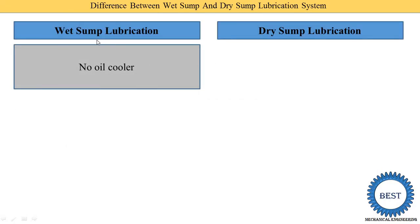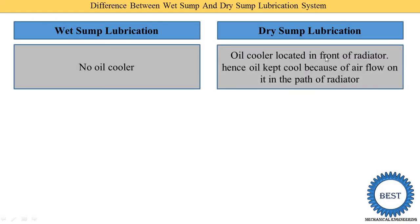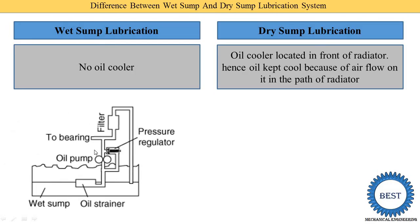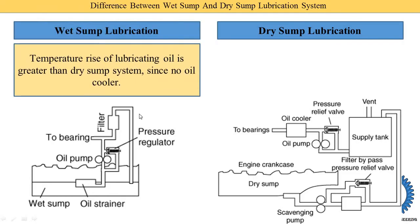The next difference is the oil cooler. In a wet sump lubrication system, no oil cooler is used. In a dry sump lubrication system, the oil cooler is located in front of the radiator, so the oil is kept cool due to airflow past the radiator. Here you can see in this figure of the wet sump, no oil cooler is used. In the dry sump system, the air cooler cools the oil using airflow, which is why it is also called a radiator. Air passing through it reduces the oil temperature before it is supplied to the components.